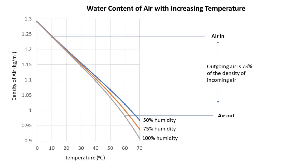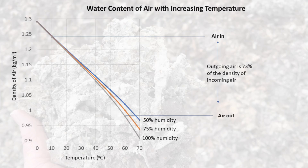Fourth, air becomes lighter as temperature increases. It also becomes lighter with increasing humidity. This means that the hot, moist air inside the compost pile is going to move upward.